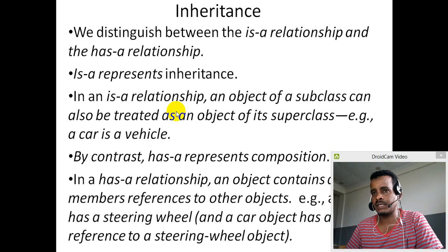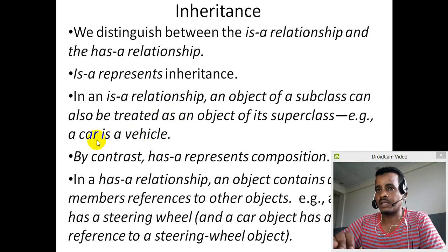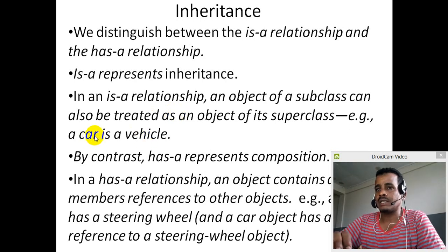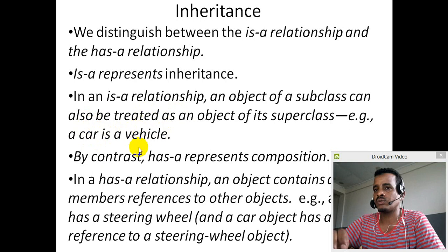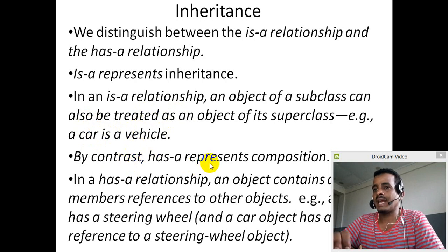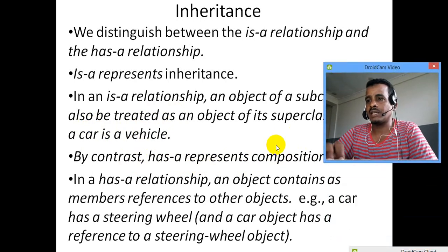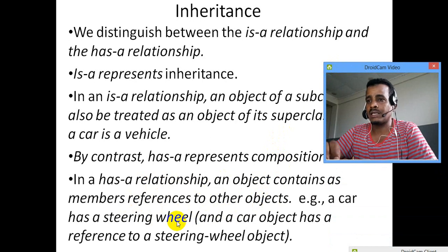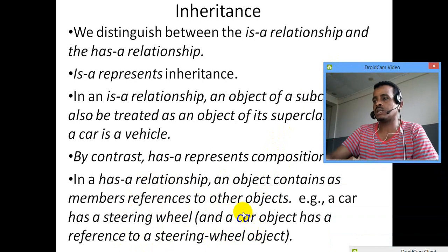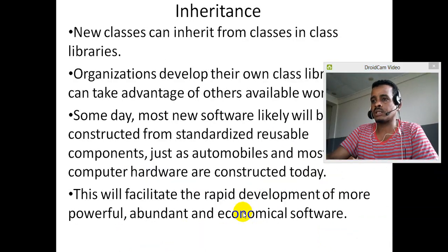For example, vehicle is a superclass and car is a subclass — an 'is-a' relationship. By contrast, composition is a 'has-a' relationship. In a composition relationship, an object contains references to other objects. For example, a car has a steering wheel — the car contains a reference to the steering wheel.